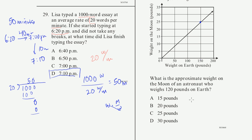What is the approximate moon weight of an astronaut who weighs 120 pounds on Earth? Since the ratio is about one-sixth, we find 120 on the Earth axis, read up the graph, and it looks like about 18 or 19 pounds. The choices are 15 and 20 — we're definitely closer to 20 — so the answer is 20 pounds.